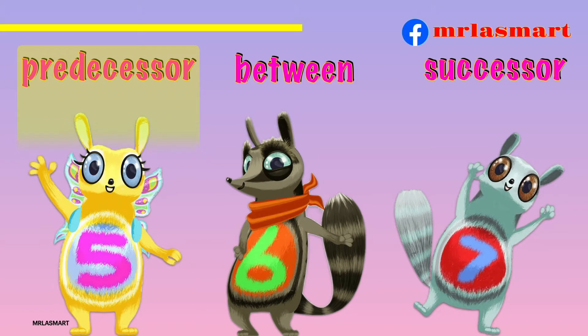Sandy is the predecessor of Flinders, or I can say, number five is the predecessor of number six.